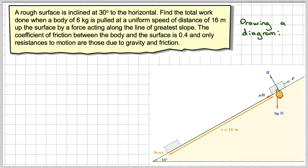So if we put on the forces that we have, we have 6g acting downwards, we have the resultant R perpendicular to that, we have a frictional force of mu r and f would have to be equal to mu r in order for this to move at a constant velocity.